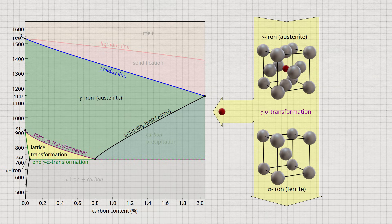In principle, this can happen in two ways. With slow cooling and a relatively high carbon content, the carbon atoms precipitated in sufficient numbers have enough time to form their own hexagonal lattice structure. In this lattice modification, the carbon is also called graphite. In this case, the carbon precipitates in pure form.